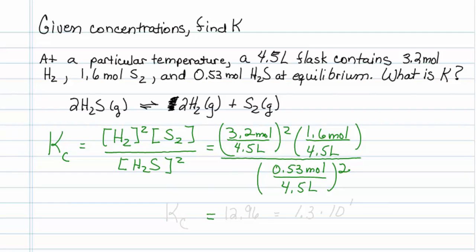So plugging that into my calculator gives me a value of 12.96, and just looking at the sig figs, looks like I can only do it to 2, so how about writing this as 1.3 times 10 to the first power, and that is my value of Kc.